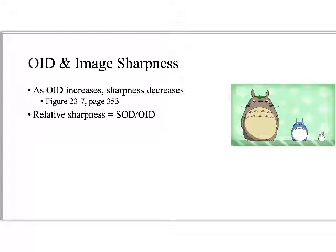SOD over OID gives us the relative sharpness. Going back to what we really need to know in everyday life as an X-ray tech: as OID increases, image sharpness is lost. Think about situations where you can't get the image receptor where you want it — the patient's shoulder is blocking the way, or a sponge, pillow, or orthopedic hardware is in the way in a post-op X-ray. When you can't get the image receptor close enough, the image is going to start to get kind of blurry.